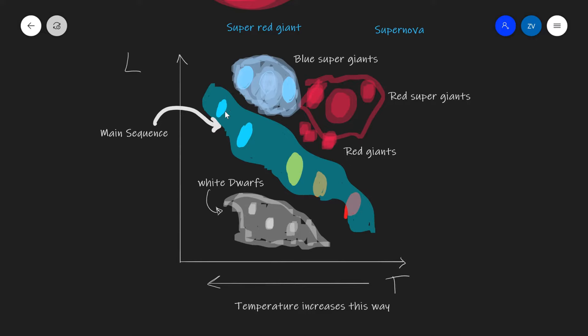We need to be able to remember and identify the different features of this graph. The main diagonal is the main sequence — this is where the star will spend the vast majority of its life cycle. When it runs out of fuel it will either turn into a red supergiant or a blue supergiant, and eventually it may turn into a white dwarf. White dwarfs are presented by the lower left-hand region of the Hertzsprung-Russell diagram.